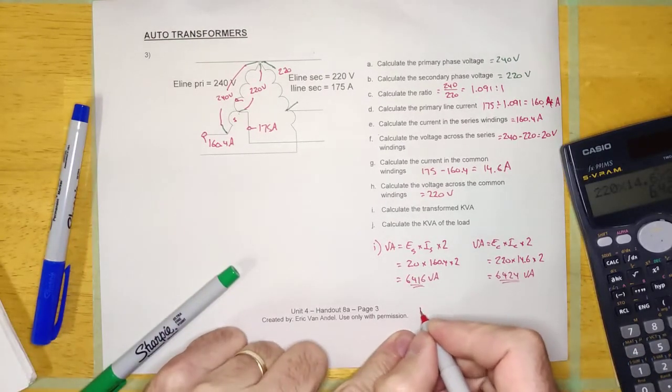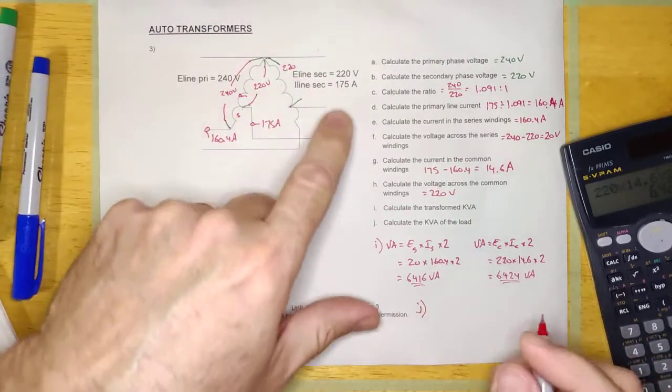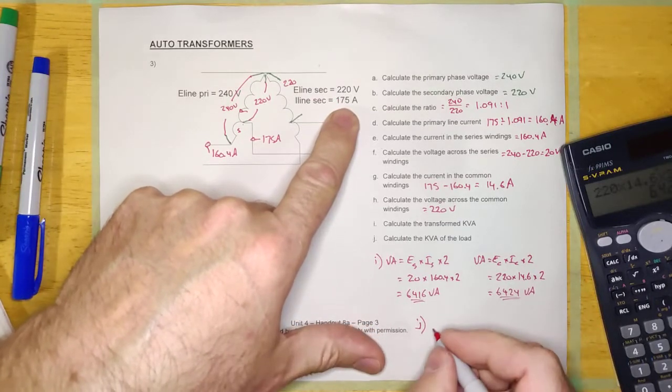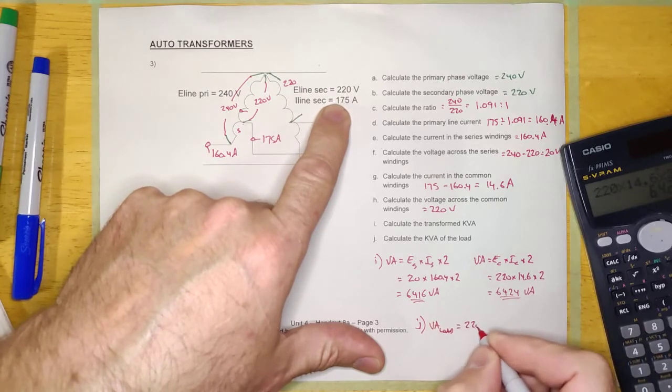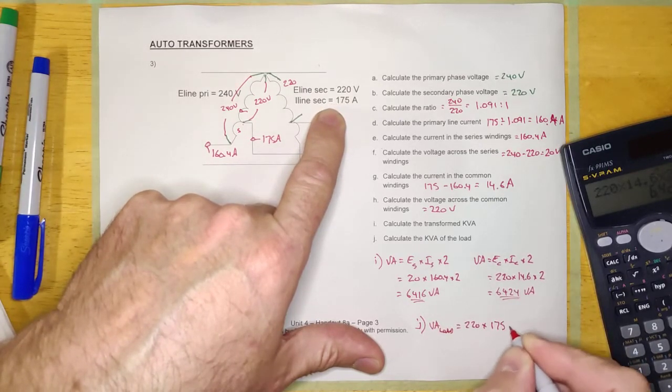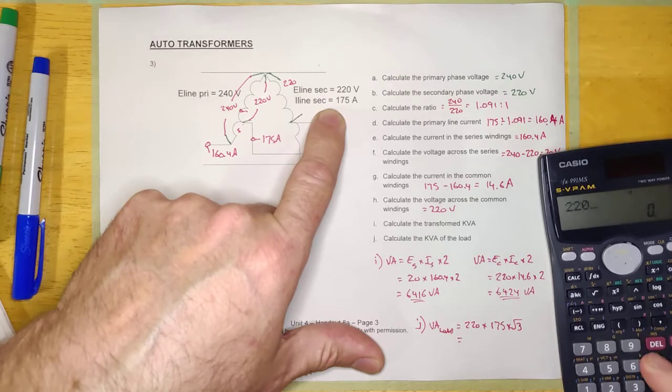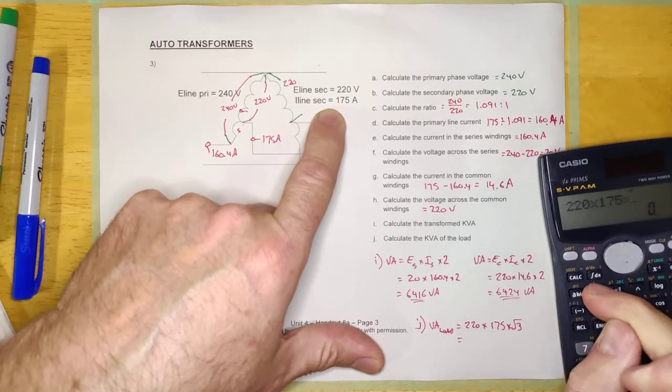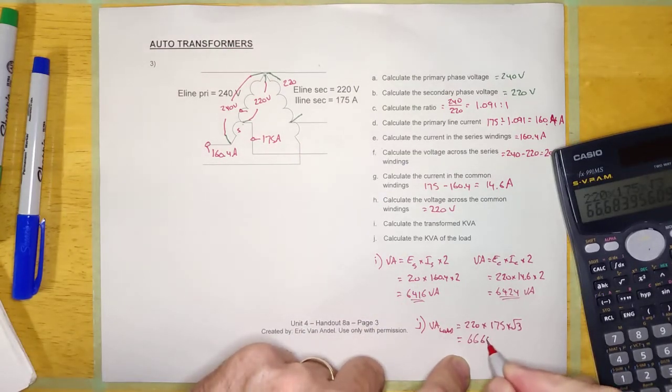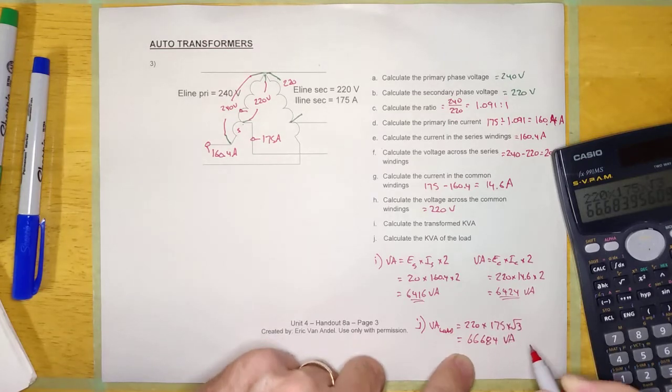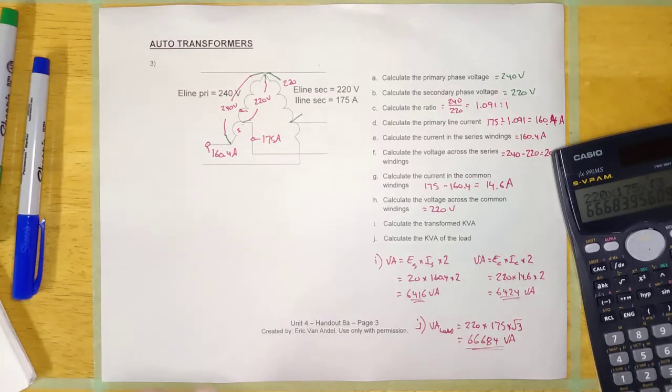Last question - calculate the kVA of the load. I don't know anything about the kVA of the load, but I know it's three phase, so I'm going to calculate it E-line, I-line, root 3. So the VA of the load will be E-line, 220 volts, times I-line, 175 amps, times root 3, because that's a three phase load. 220 times 175 times root 3, 66,684 VA. And again, massive load made out of a tiny transformer.